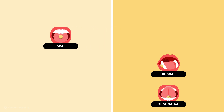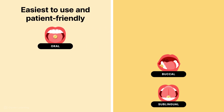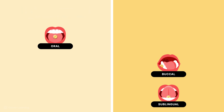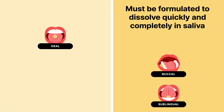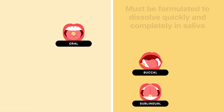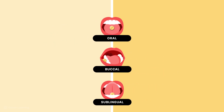Oral administration is the easiest to use and generally more patient-friendly, particularly for long-term therapies. Sublingual and buccal drugs must be formulated to dissolve quickly and completely in the saliva, which is not a requirement for oral medications. Now let's take a look at what each of the terms oral, buccal, and sublingual refers to.